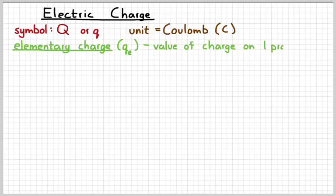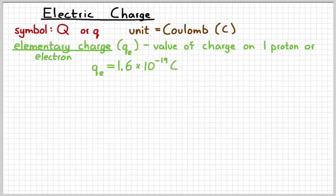To give you an idea of how big that unit is, the elementary charge is the value of the charge on a proton or an electron in Coulombs. We give it the symbol Q subscript E. And in Coulombs, it has a value of 1.6 times 10 to the negative 19 Coulombs. So you can see that a Coulomb is a pretty large unit for charge compared to the charge on an electron or a proton.